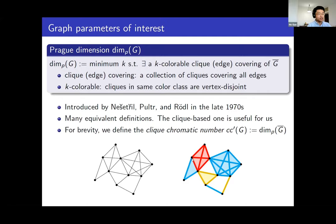For example, this edge is covered by the red one and the blue one, and this edge is covered by the yellow one. So they form a clique edge covering.